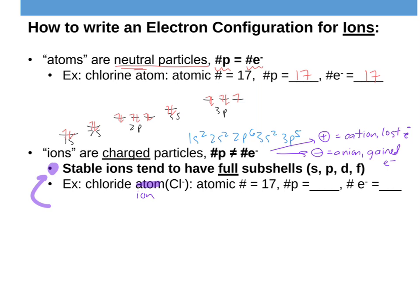Stable ions tend to have full subshells — full S's, P's, D's, or F's. This is sometimes called the noble gas rule or octet rule. For the chlorine ion (Cl minus 1), its atomic number is 17, so it has 17 protons. But as an anion gaining one electron, it has 18 electrons.